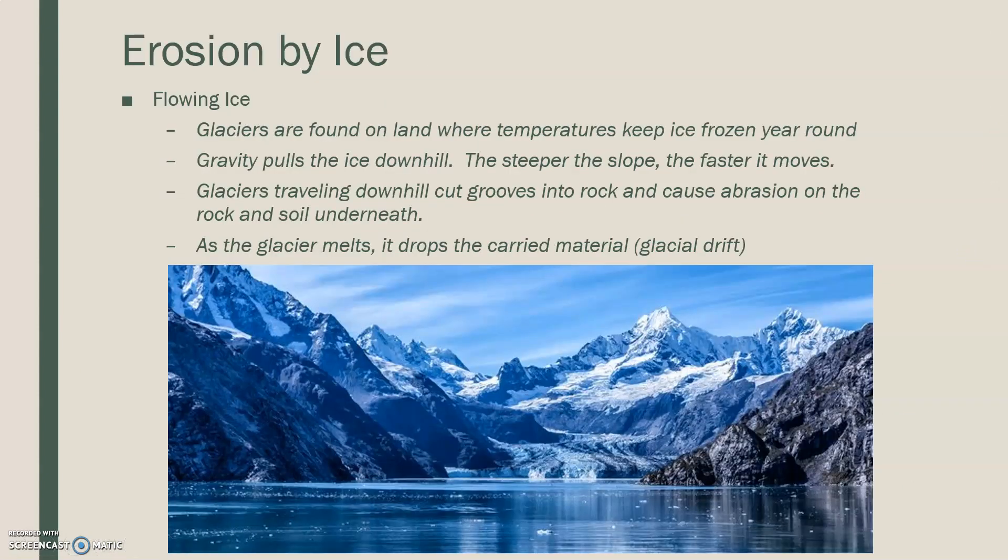Erosion by ice. Flowing ice, even though you may not notice it flowing, it is moving. So glaciers are what we're talking about with flowing ice. Glaciers are found on land where temperatures are going to remain frozen — 32 degrees Fahrenheit or below — year-round. Gravity is going to keep that ice moving downward. You can't see it moving, but it does move over hundreds of years a decent amount — about only a couple centimeters each year, but over time that adds up. The steeper the slope, the faster it does move.